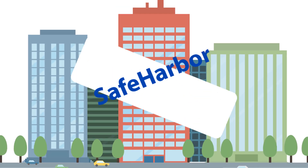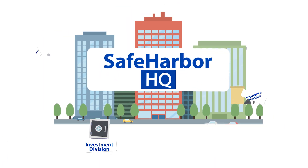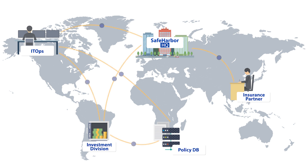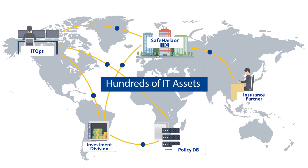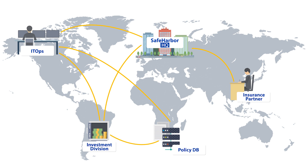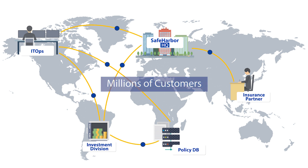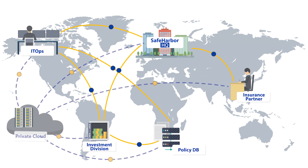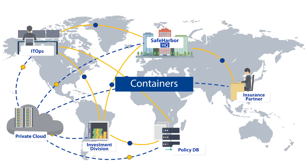Safe Harbor is a global financial firm that sells insurance products through partners. Each location runs dozens of applications and hundreds of IT assets on multiple networks to support millions of customers. Recently, critical applications moved into a private cloud using advanced technologies like containers, Kubernetes, and OpenStack.